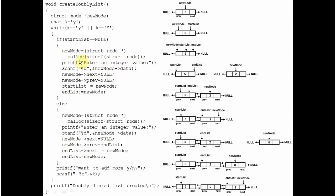The start_list pointer was initialized to null. Here you are creating a new node by allocating memory equal to the size of the structure node. sizeof finds out the number of bytes consumed by the structure node, and that memory is type-cast to a pointer of type structure node and assigned to new_node. The user is asked to enter an integer value — suppose the user enters 5. The next and previous pointers are both initialized to null. start_list is set to point at new_node, and end_list is also set to point at new_node. Whenever a new node is inserted, end_list will keep pointing to the last node while start_list remains at the first node.